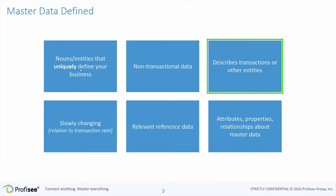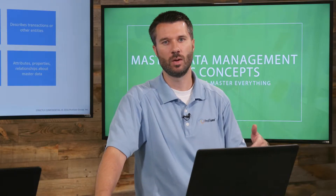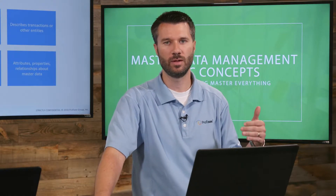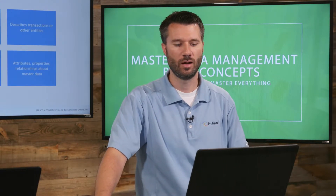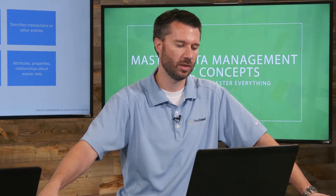MDM is non-transactional data, but it describes transactions. Transactional data would be an invoice line item with the invoice number, the invoice date, and the dollar amounts. The master data would be describing that transaction further — the product that was purchased, the customer that ordered it, the vendor that supplied it, and so on. That's the master data we're really concerned with in MDM.